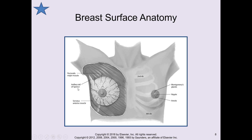We are going to talk a little bit about the breast tissue. If you can see, the breast tissue actually goes up into the axillary area. The axillary tail of Spence is an important area to check for tumors or lesions, particularly breast cancer, as many of them will appear there.